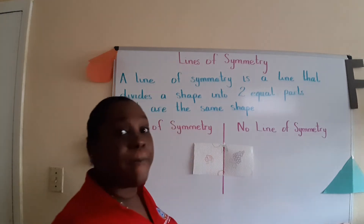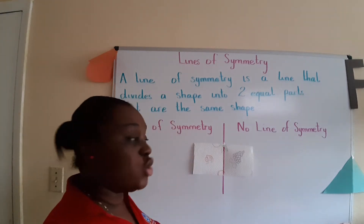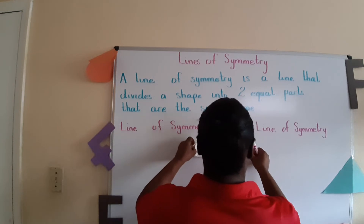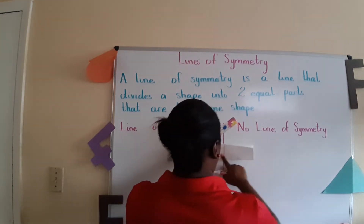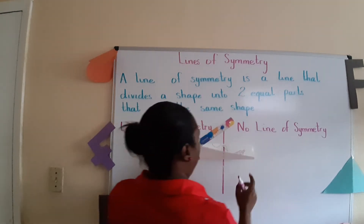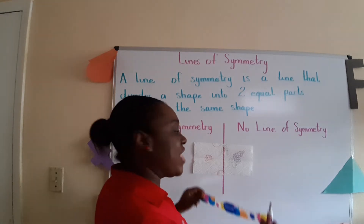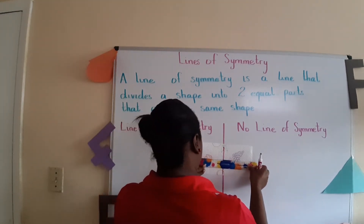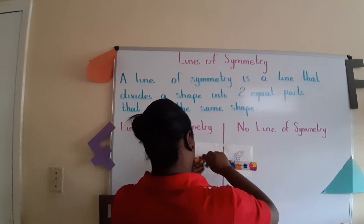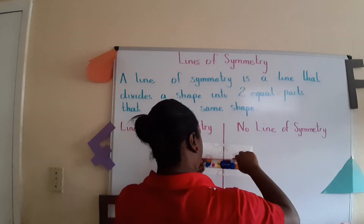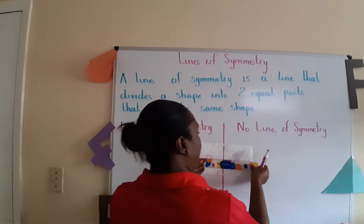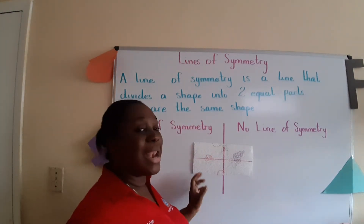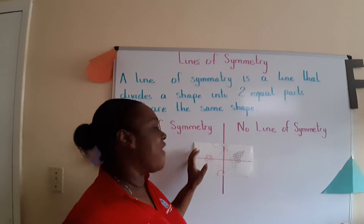Now some of you may have folded your napkin this way, and you would notice that there is another line of symmetry. So we can say that a rectangle has two lines of symmetry.